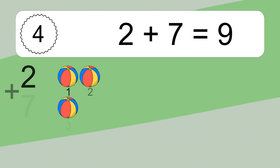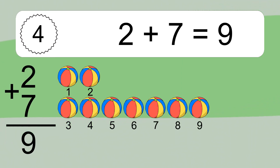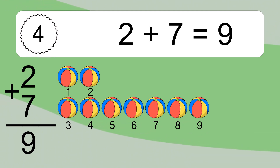2 plus 7 equals what? 2 plus 7 equals 9. Let's count it: 1, 2, 3, 4, 5, 6, 7, 8, 9.